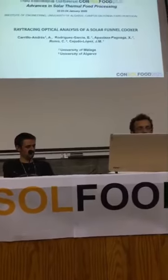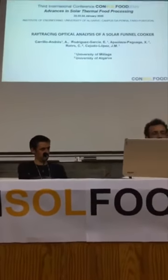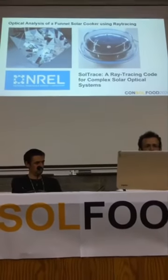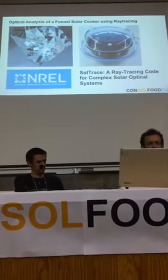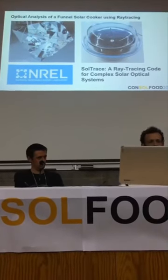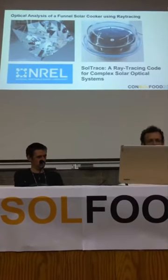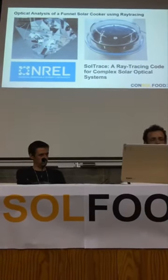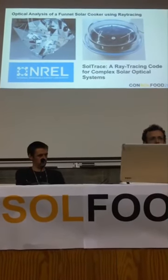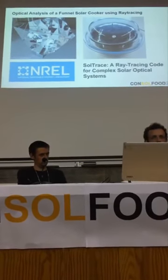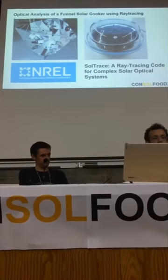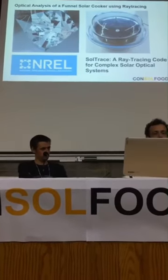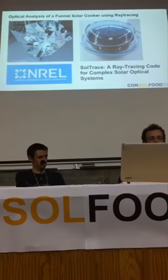What we want is to understand the experimental results. We used this tool from the National Renewable Energy Laboratory in the United States. They have a tool called SolTrace. It's a ray tracing code for complex solar optical systems. Usually it is used for concentrating solar power, but you can use it also for modeling a general optical system — like a solar cooker, like this funnel solar cooker.